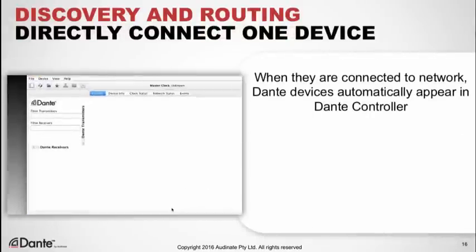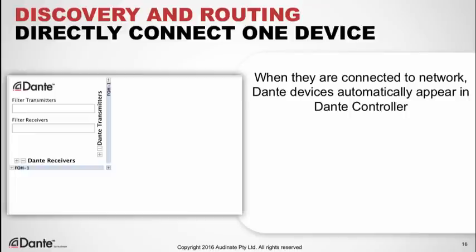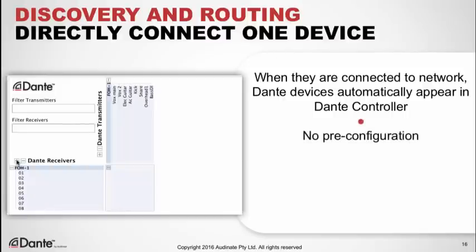When we connect a Dante device directly to our computer, it simply appears. This brings up a key point about Dante: all devices are self-discovering, without pre-configuration. Note also that the device shown here has human-readable names — we can adjust that name plus the names of the individual channels. There's no need for cryptic numbers.